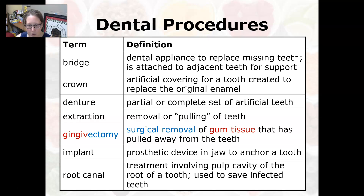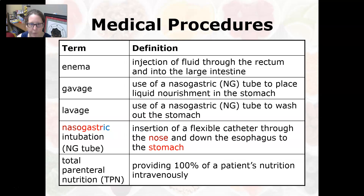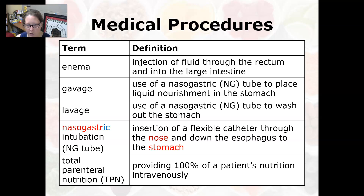Let's move on to medical procedures. An enema is an injection of fluid through the rectum and into the large intestine. Gavage is the use of a nasogastric tube to place liquid nourishment into the stomach. Lavage is the use of a nasogastric tube or NG tube to wash out the stomach.